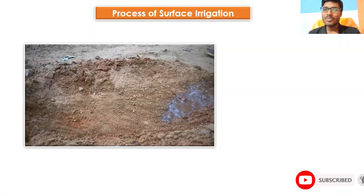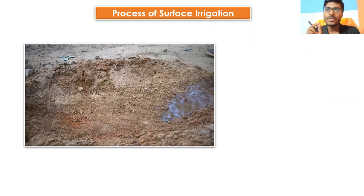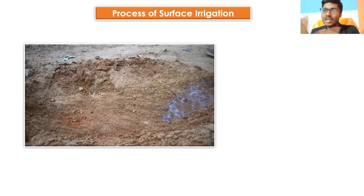Hi guys, welcome. Here is a short video lecture on the process of surface irrigation. We'll cover the detailed method of irrigation in our video lecture series on irrigation water management, but in this video we are going to discuss only the process of surface irrigation. Surface irrigation is a process in which water is applied on the soil surface and distributed on the soil surface.